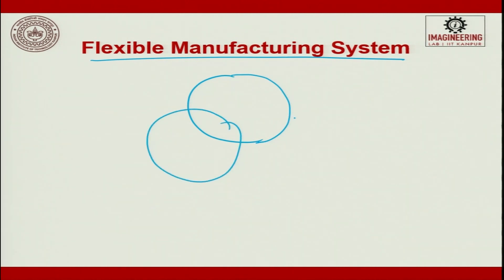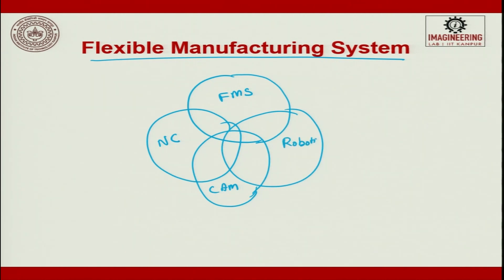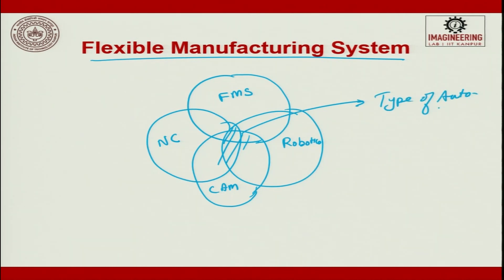When we talk about a flexible manufacturing system, there are four key technology circles that all play an important role: industrial engineering, CAM (computer aided manufacturing), FMS, numerical controls, and robotics. The center portion — the intersection of these — dictates the type of automation. All these components together determine what FMS consists of.